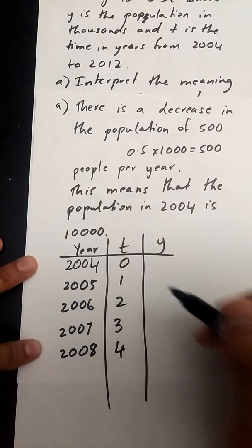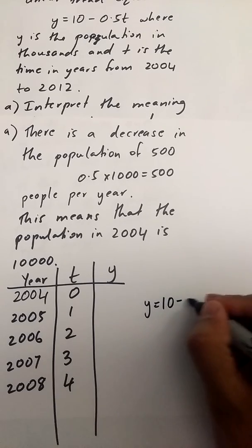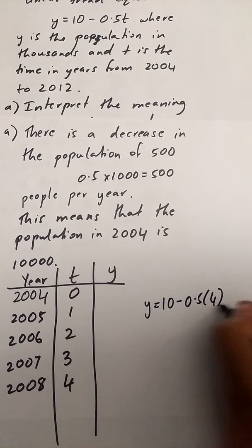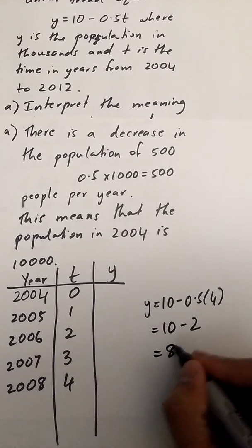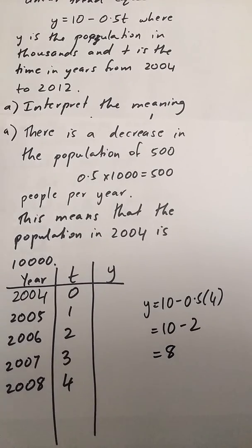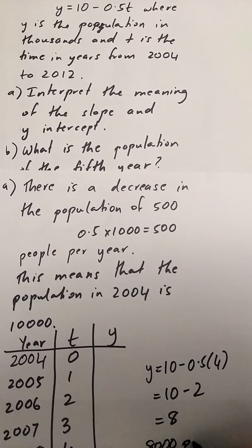So I'm going to sub that into my equation y equals 10 minus 0.5t. So I have y equals 10 minus 0.5 times 4, which is 10 minus 2, which is 8. So my population of the fifth year is 8,000 people.